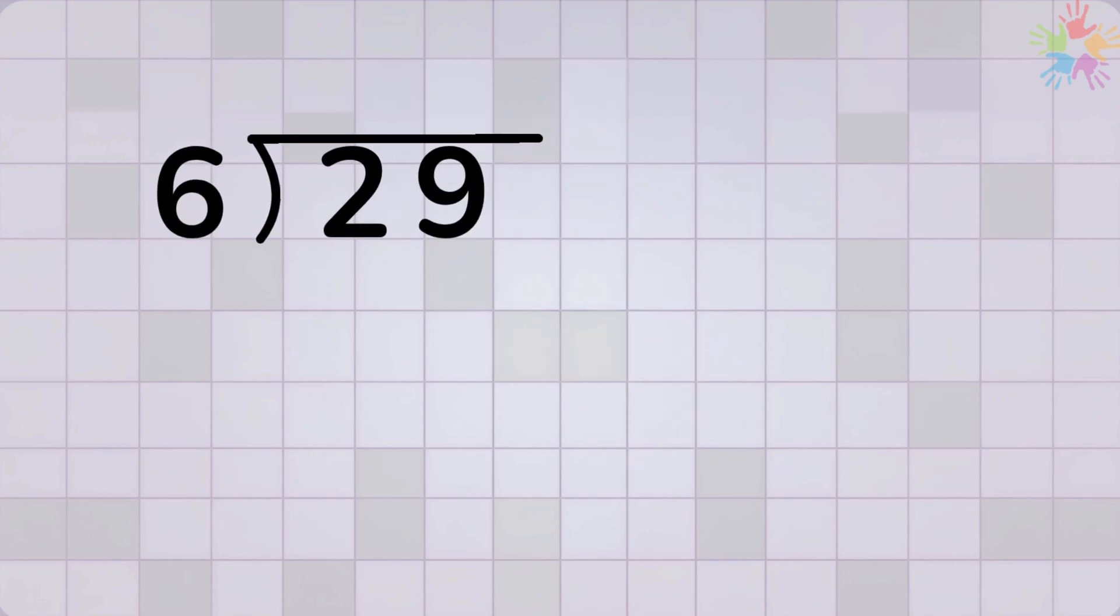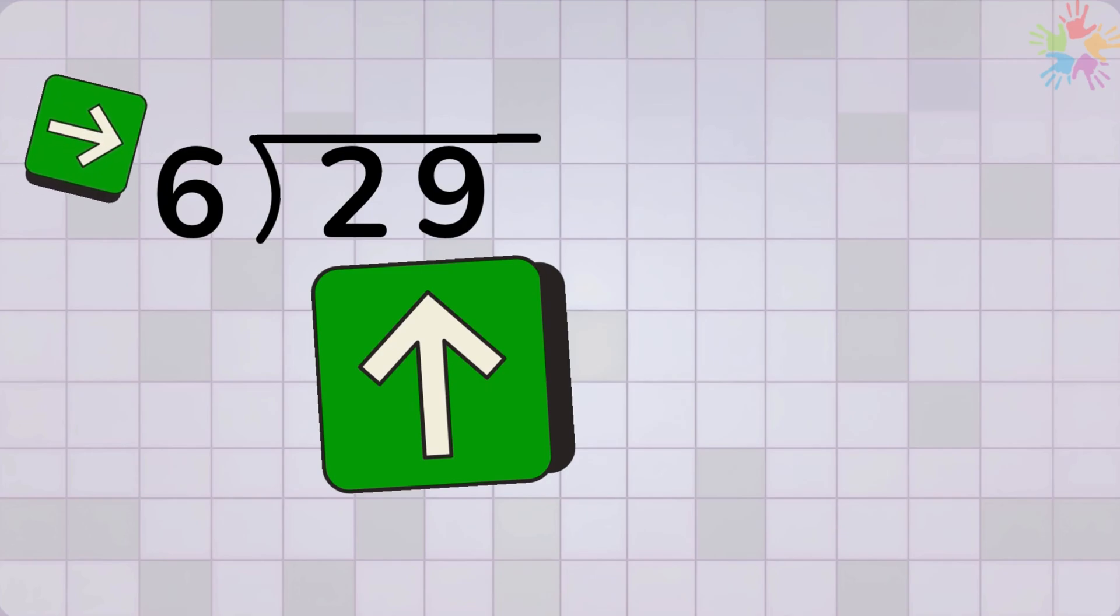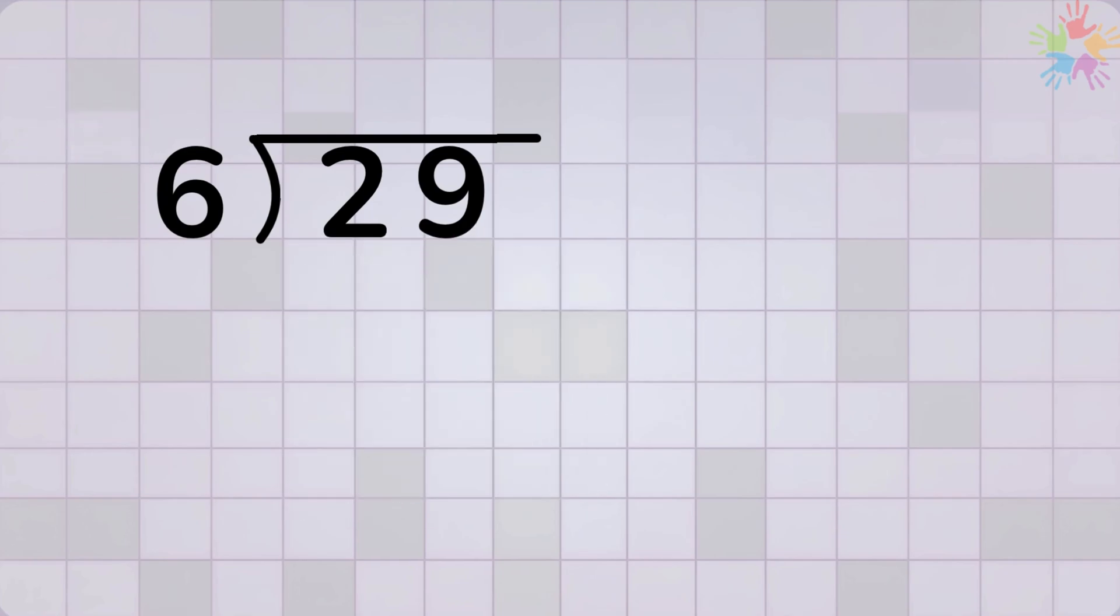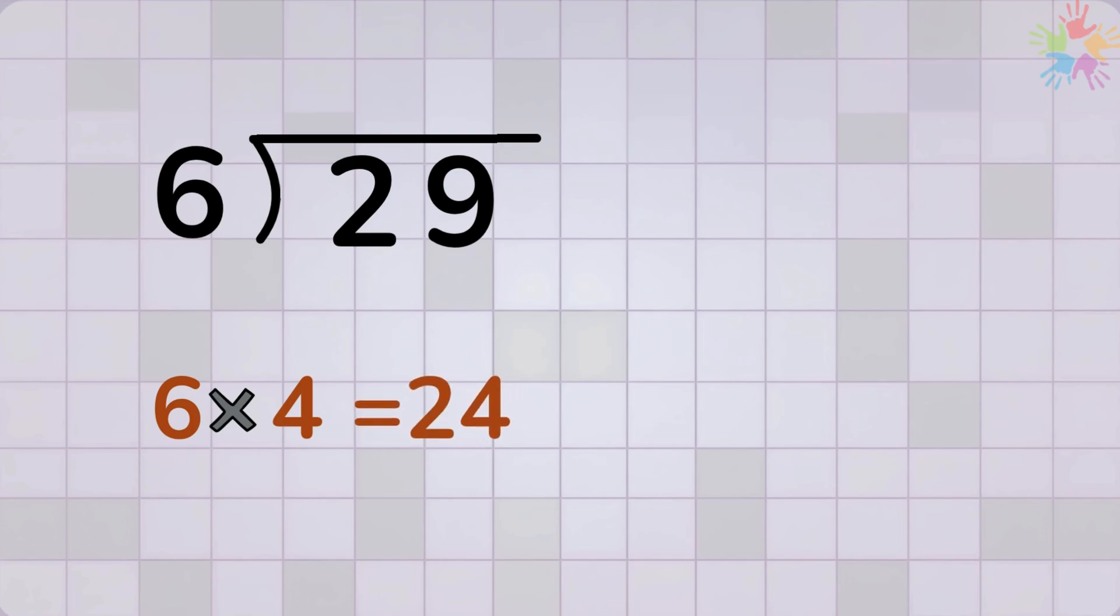Now let's try one more example with a remainder. We want to divide 29 by 6. As always, we ask how many times does 6 go into 29? I think we have to try a few guesses. 6 times 4 equals 24. Well, that sounds promising, but let's keep going.